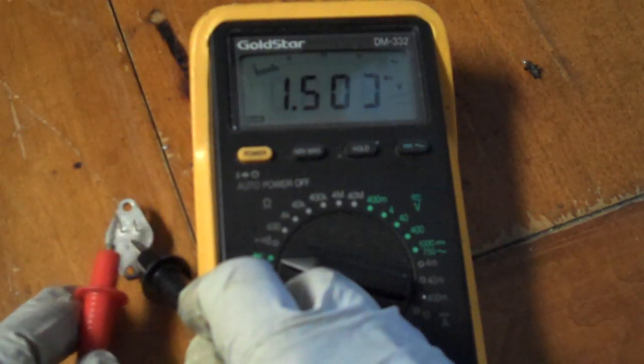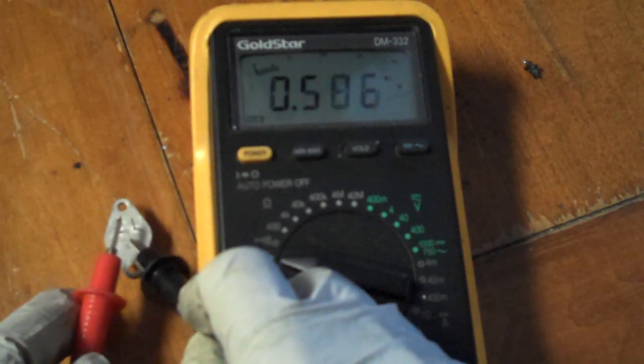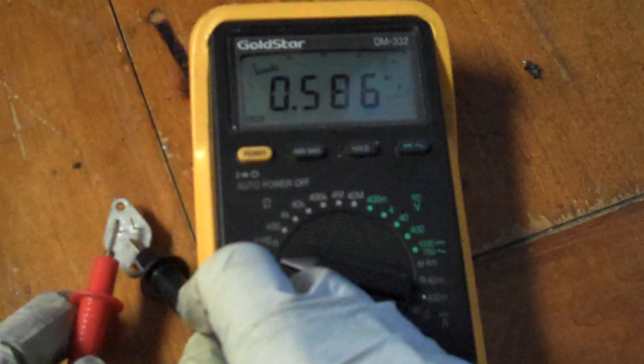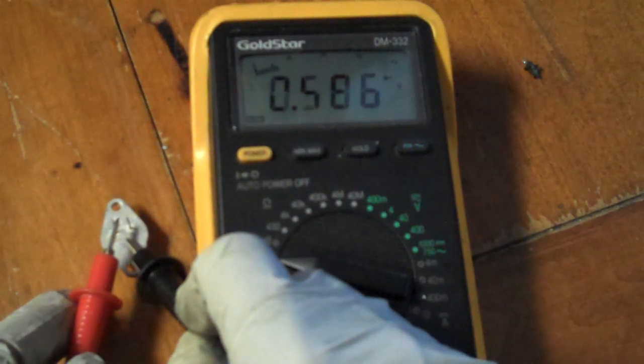So this is a good transistor, and this is how to check a transistor. You shouldn't have any reverse leakage, and you should have no shorts anywhere. It should measure as two diodes.